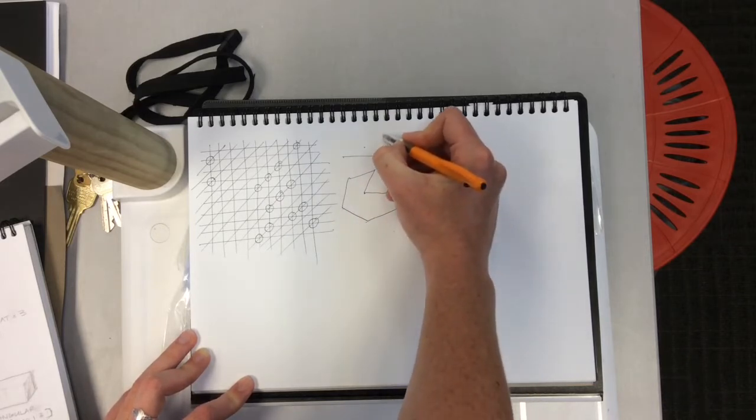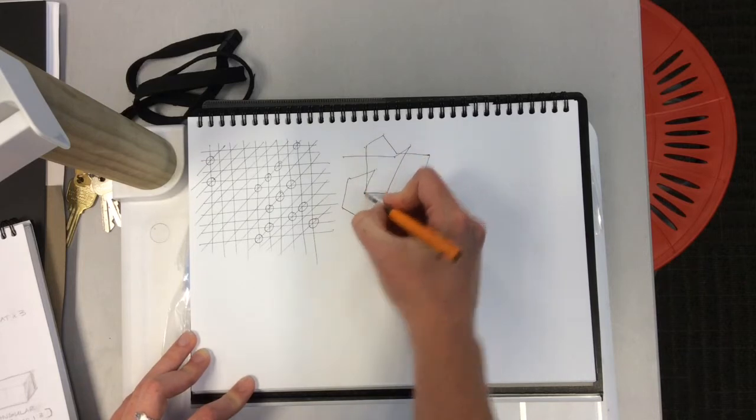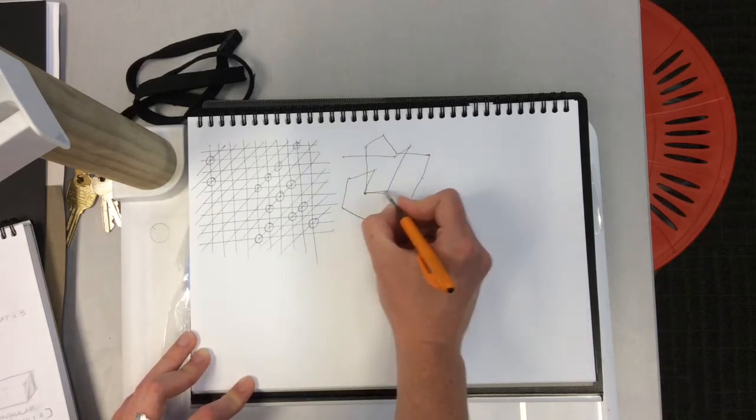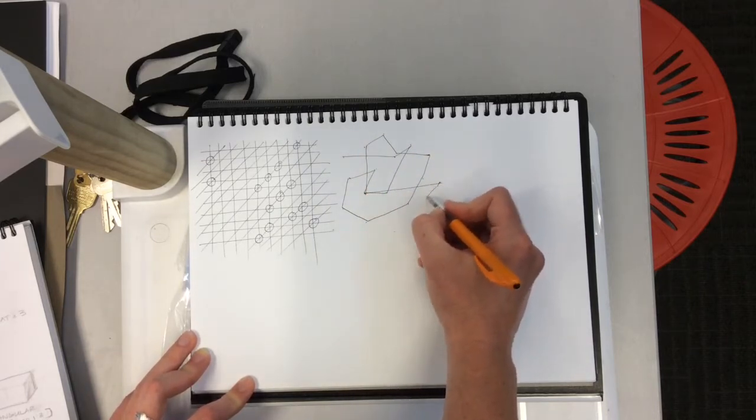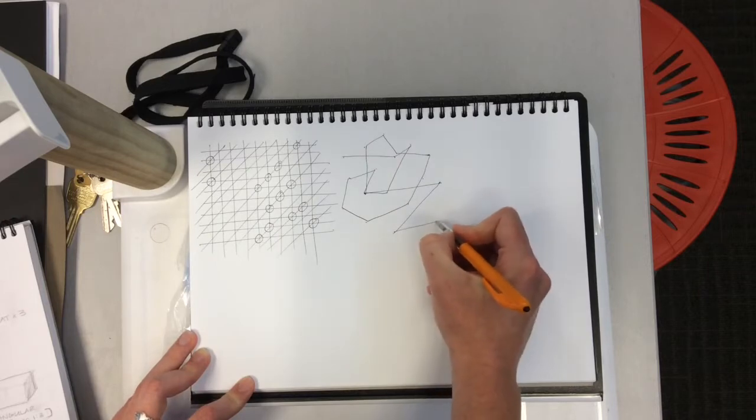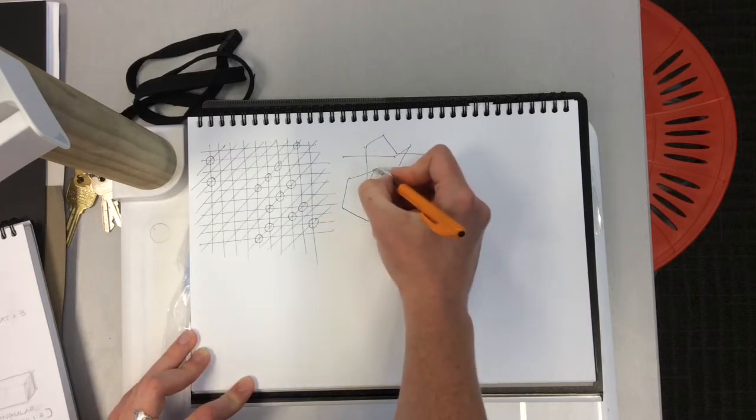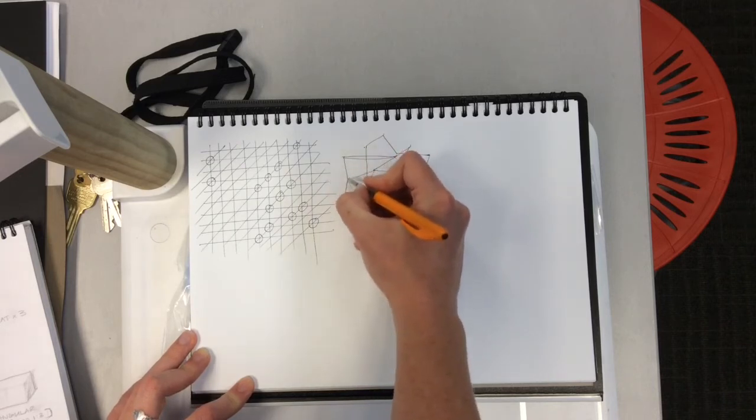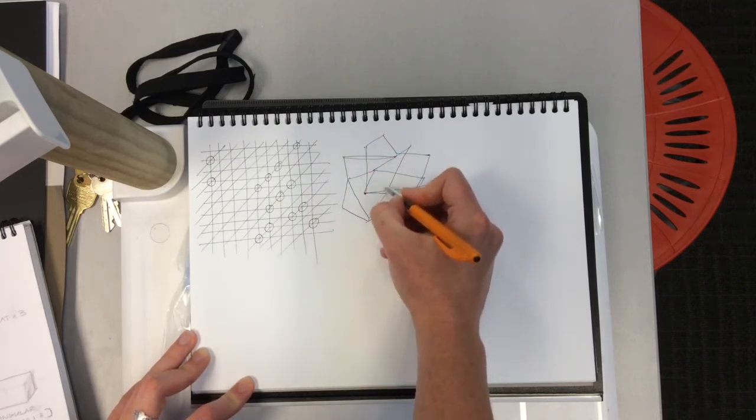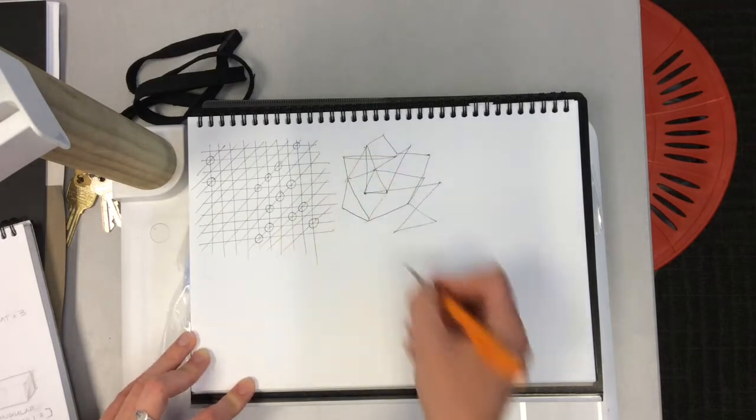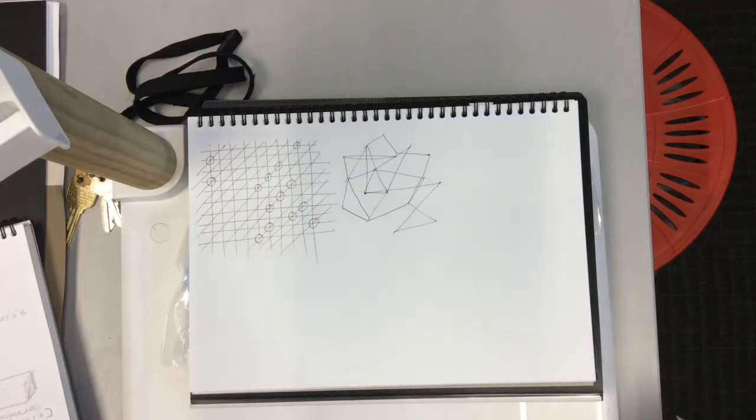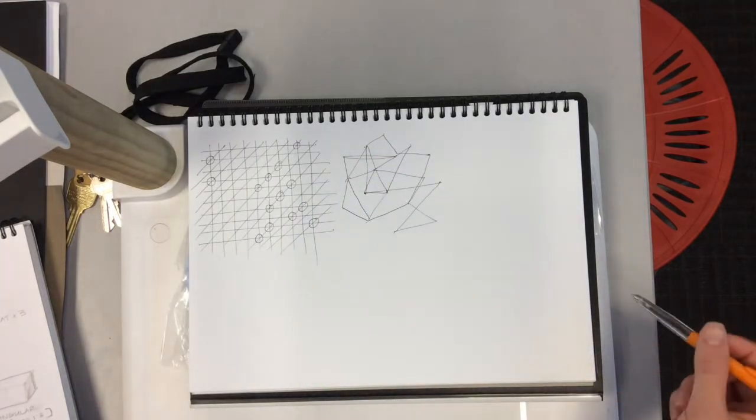Remember, your hand is going to be nice and loose to be able to do this, to behave in the way that your eyes are telling it. Otherwise it's not going to want to move in that direction very comfortably. Hopefully your lines are getting straighter as you do that.